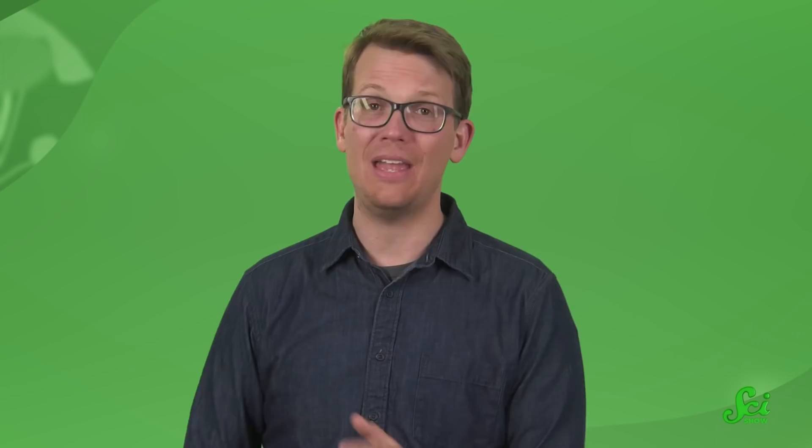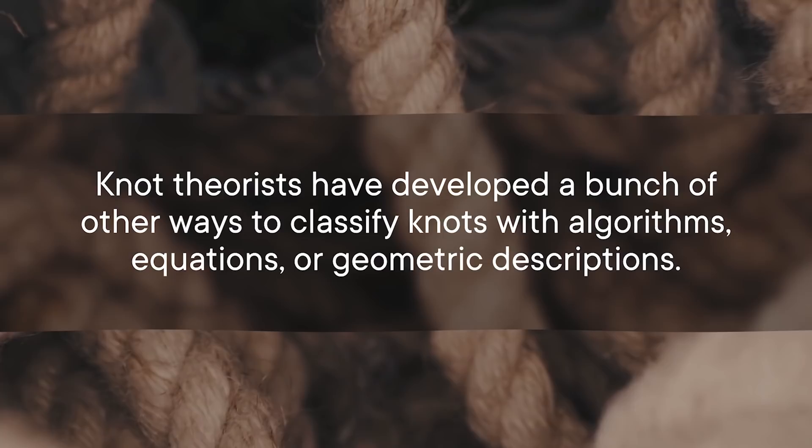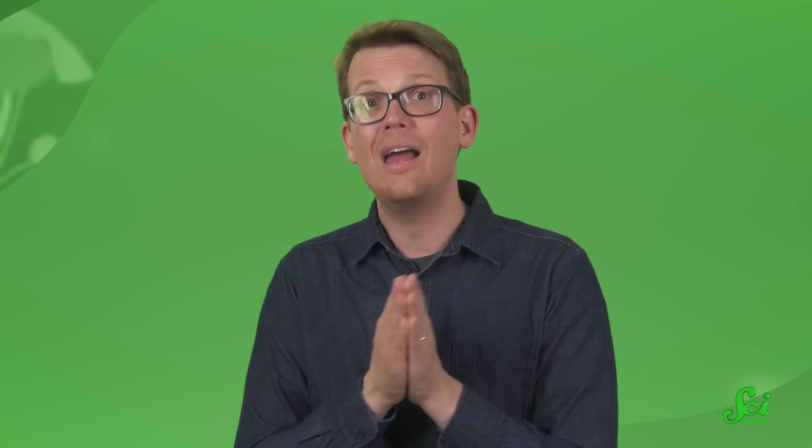It's such a tricky problem that even computers haven't been able to solve it completely yet. Knot theorists have developed a bunch of other ways to classify knots with algorithms, equations, or geometric descriptions. One way is to flatten out a knot and imagine it as a complicated roadway with overpasses and underpasses. You can then describe the route numerically, writing which underpass matches which overpass. Other, more involved techniques relate the numbers of different types of crossings to each other in an equation to find out if the knots are equivalent.